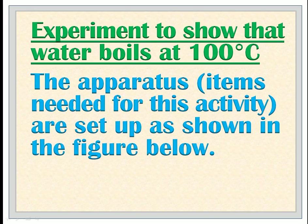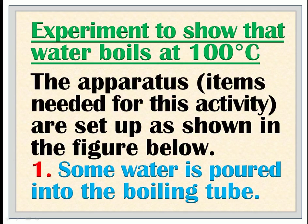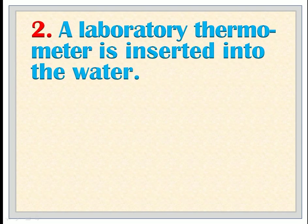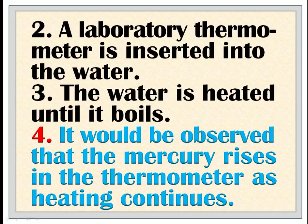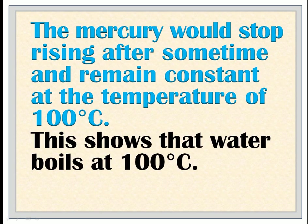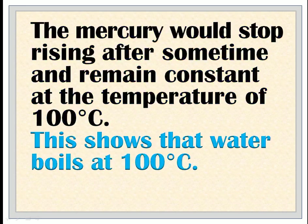Experiment to show that water boils at 100 degrees Celsius. The apparatus and items needed for this activity are set up as shown in the figure below. 1. Some water is poured into the boiling tube. 2. A laboratory thermometer is inserted into the water. 3. The water is heated until it boils. 4. It would be observed that the mercury rises in the thermometer as heating continues. The mercury would stop rising after some time and remain constant at the temperature of 100 degrees Celsius. 5. This shows that water boils at 100 degrees Celsius.